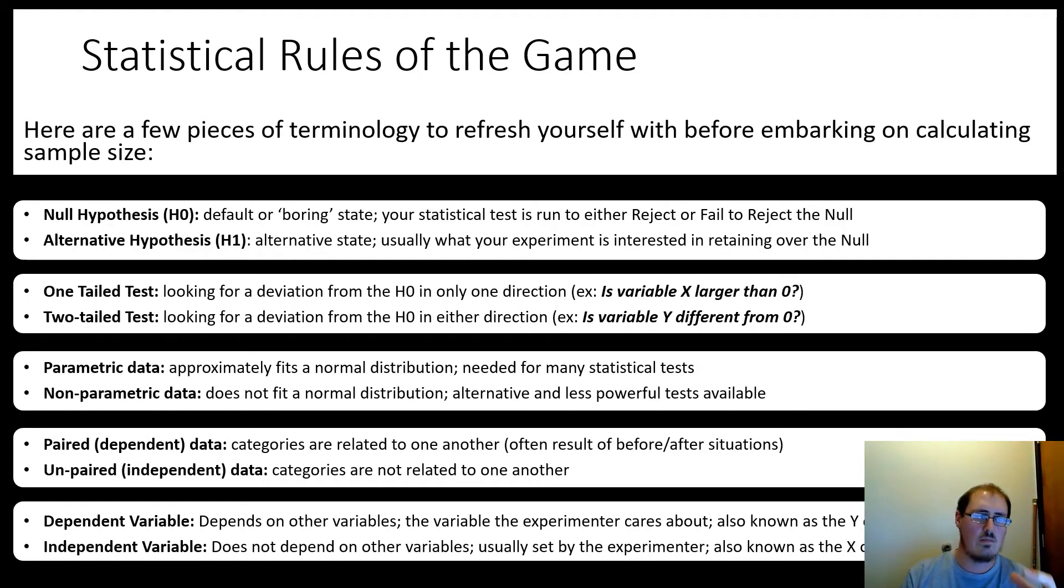Like the null hypothesis, if you're treating mice with a cancer drug and a control, the default, the null is there's no difference between the treatment and the control. Whereas the alternative, also known as H1, is usually what you're actually interested in, kind of the exciting state. There should be, there is a decrease in cancer with the drug compared to the control.